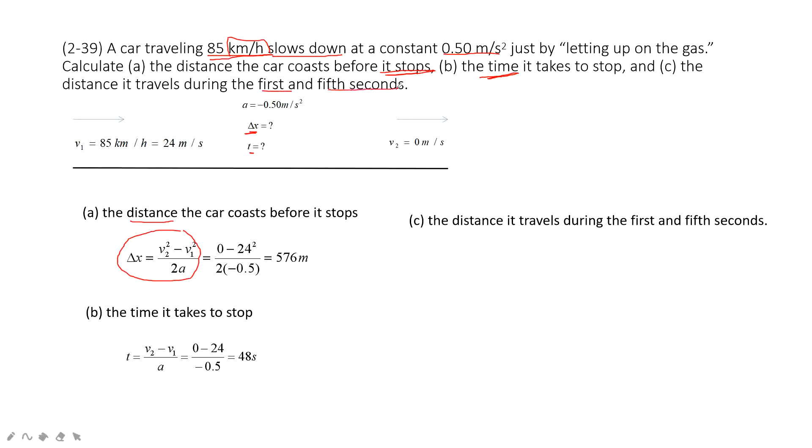The next one asks you the distance it travels during the first and fifth second. That means we must find the displacement, right? Displacement at the first second. The first second is t equals 1 minus t equals 0. The fifth second is t equals 5 minus t equals 4. Now, we can draw a v-t graph to understand that.